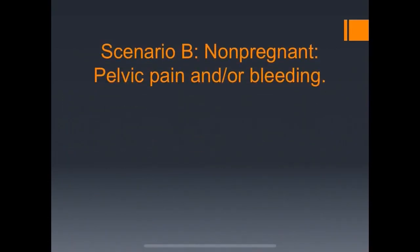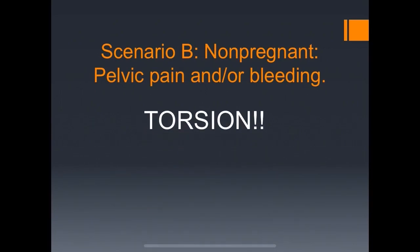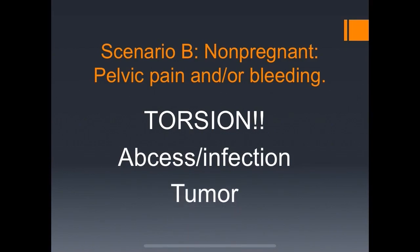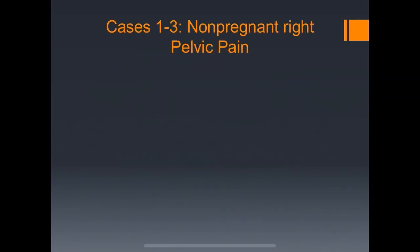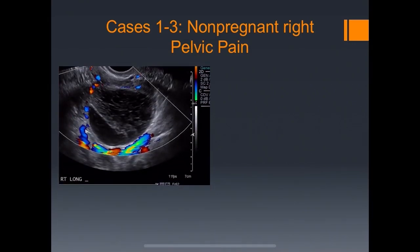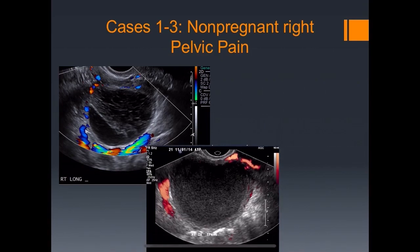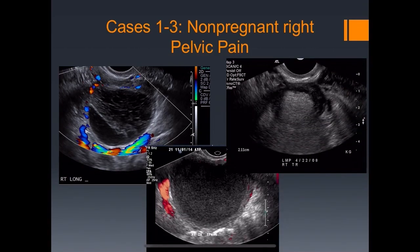Now the second scenario is the non-pregnant patient with pelvic pain or bleeding. The most critical findings we look for are surgical indications — torsion and abscess or infection — and we will sometimes see tumor. The first three cases are one image each from three different patients presenting with right adnexal pain.